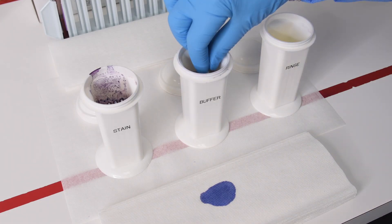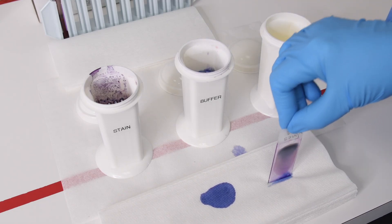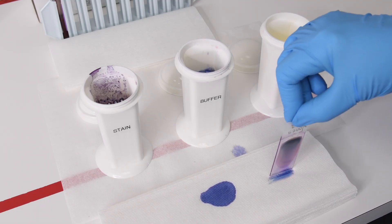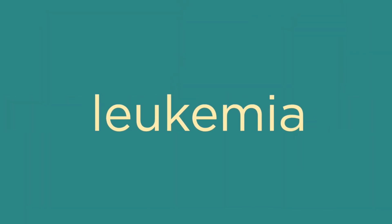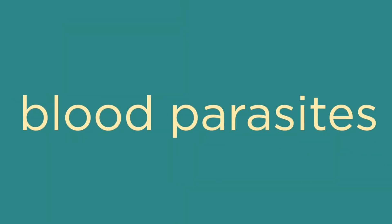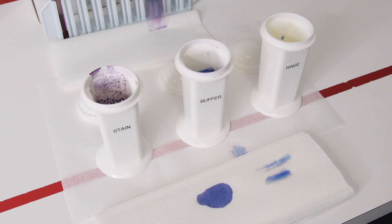The Wright-Giemsa stain is a hematological stain for differential staining procedures for peripheral blood and bone marrow. This stain can be useful for diagnosing various types of anemia, infections, and leukemia. It is also useful when rapid results are needed in the detection of blood parasites, such as the malaria-causing plasmodium species or trypanosomes.